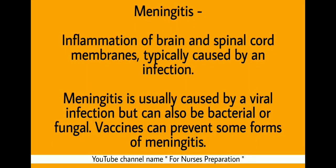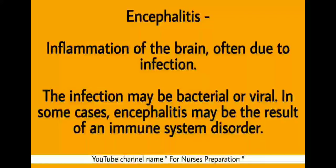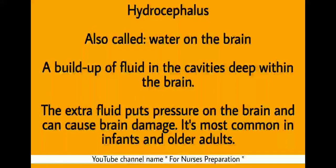Meningitis is the inflammation of the brain and spinal cord membranes, typically caused by an infection — usually viral, but can also be bacterial or fungal. Vaccines can prevent some forms of meningitis. Encephalitis is inflammation of the brain, often due to a bacterial or viral infection, and in some cases may result from an immune system disorder. Hydrocephalus, also called water on the brain, is a buildup of fluid in the cavities deep within the brain. The extra fluid puts pressure on the brain and can cause brain damage. It is most common in infants and older adults.